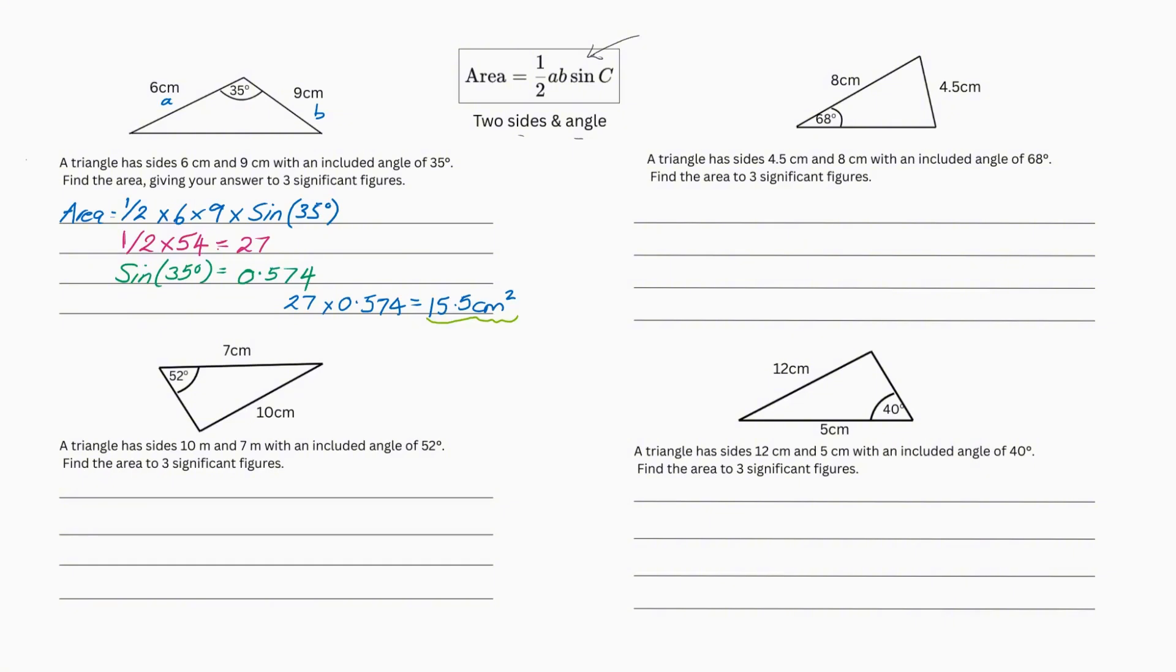I've done the first one as an example as usual and you should be able to understand it. So we're going to do a triangle of sides 6cm and 9cm with an included angle of 35 degrees. Find the area, giving your answer to three significant figures. So we have two random sides, 6 and 9 and we have our angle. So this meets our criteria for our formula.